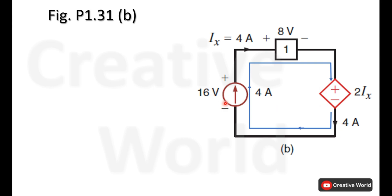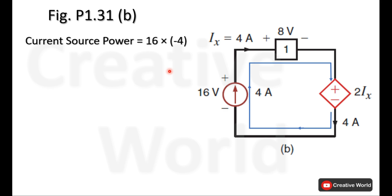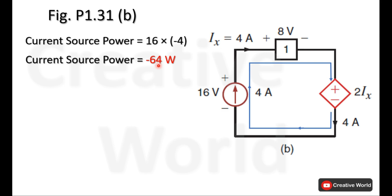In circuit B, the voltage across the current source and element 1 are given, but the voltage across the current-controlled voltage source is not given. We need to calculate its voltage using the value of Ix, which is 4 amperes. The current source power will be the voltage across it — 16 volts — multiplied by the current through it — 4 amperes. Because the current is entering from the minus terminal and leaving from the positive terminal, this current is taken with a minus sign, giving a total current source power of minus 64 watts, meaning it is supplying 64 watts.